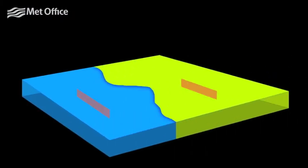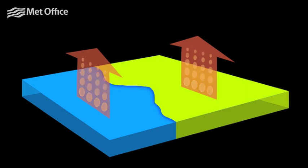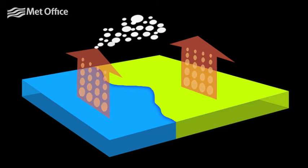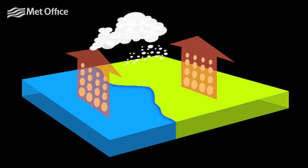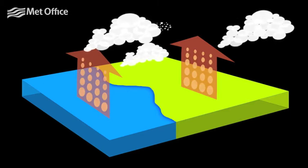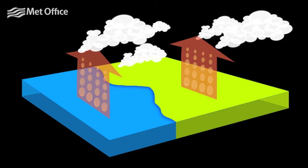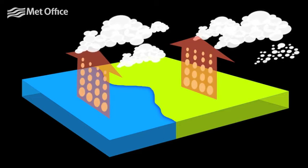The ground is heated by the sun throughout the day which heats the air above it, which then rises through the cold air above that. As it rises, it expands and cools, and clouds form which in turn can lead to rain and snow.